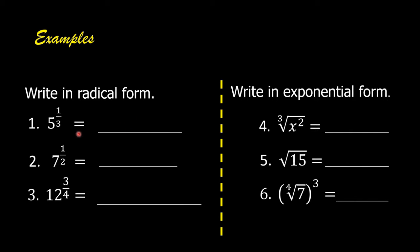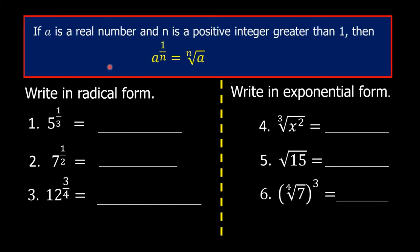Number one: five raised to the exponent of one-third. We are going to use the rule: if a is a real number and n is a positive integer greater than one, then a raised to the exponent of one over n is equal to the nth root of a. This is in exponential form and this is in radical form.